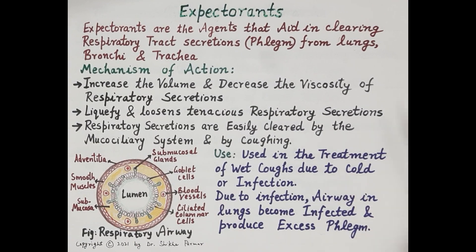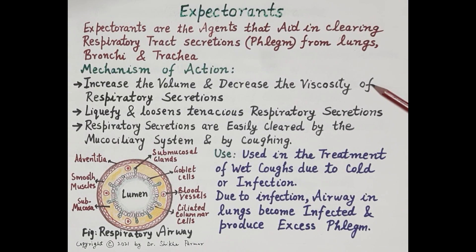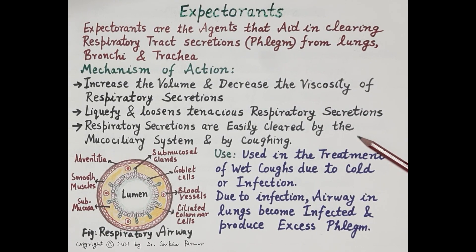A productive or wet cough is produced because of excess secretion by the goblet cells and submucosal cells. An expectorant aids in coughing out phlegm from the respiratory tract, and thus expectorants are used in treatment of wet coughs due to cold and infection. Expectorants increase the volume and decrease the viscosity of respiratory secretions — they liquefy and loosen tough, tenacious phlegm adhered to respiratory tubes. Due to liquefaction, secretions are easily removed by cilia and by coughing.